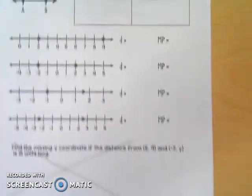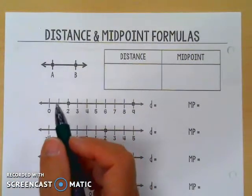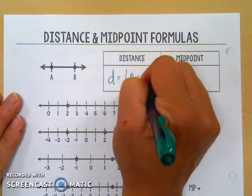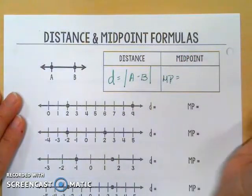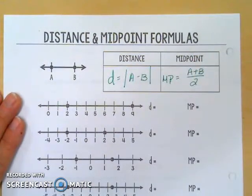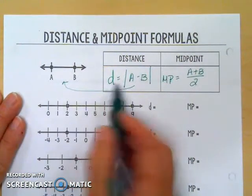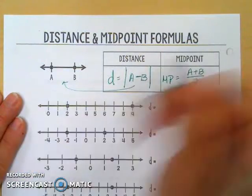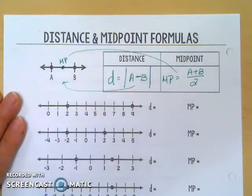We don't always have distance and midpoint on a grid — sometimes it's just on a number line. The distance formula on a number line is simply the absolute value of A minus B, and since you're taking the absolute value it doesn't matter which one you subtract first. The midpoint on a number line is the same concept: take the two points, add them together, and divide by 2 to find the middle. Distance can never be negative, which is why we take the absolute value.